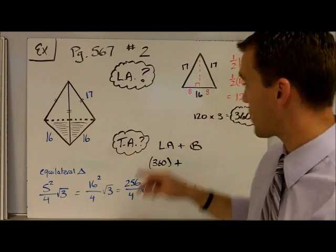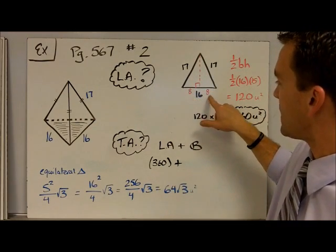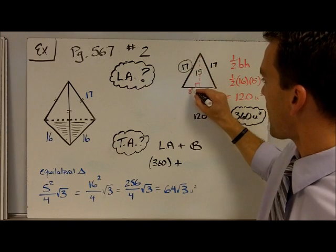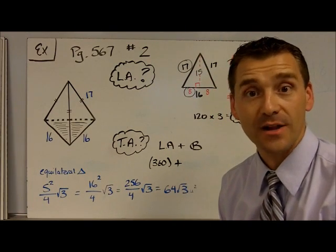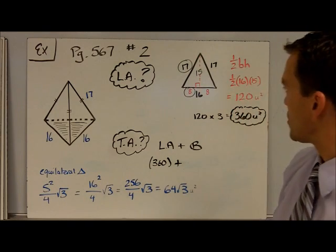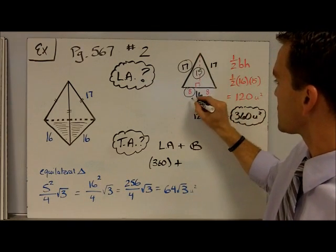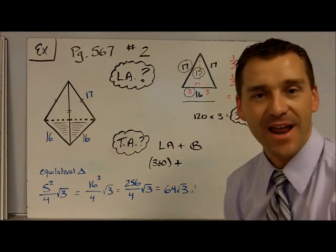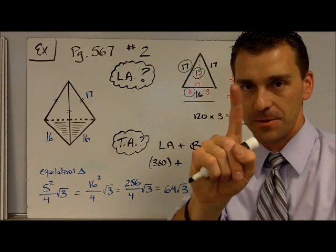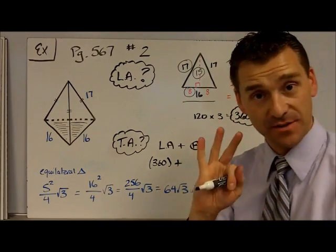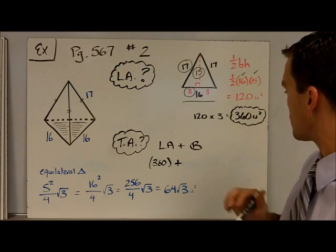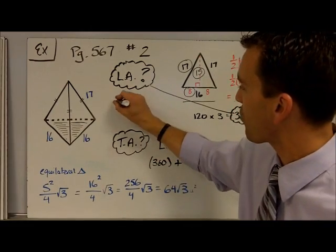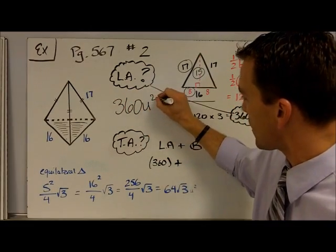So I just drew an altitude. It's an isosceles triangle, so that breaks this bad boy up into 8 and 8, which means that this makes the height 15. You can use Pythagorean theorem, or you could look at it and say, oh look, it's a triple: 8, 15, 17. So I got that as the height. 16 is my base. Multiply it all out, so I get 120, and that is the area of one of the faces. So if I take that times 3, because there's 3 faces that are the same, that gives me 360 units squared. So that right there is my lateral surface area. 360 units squared.